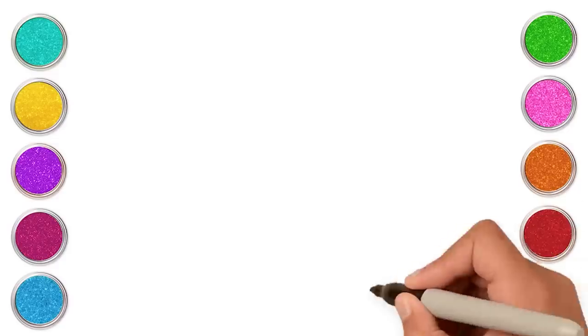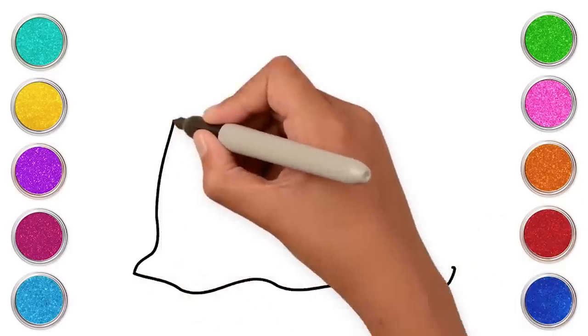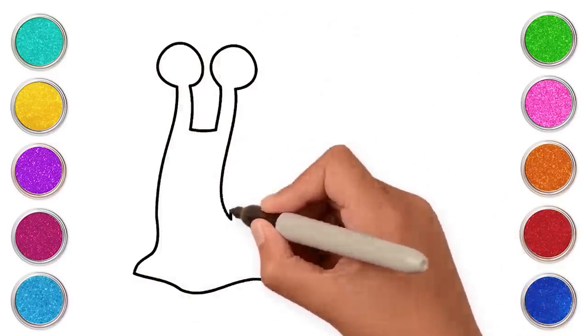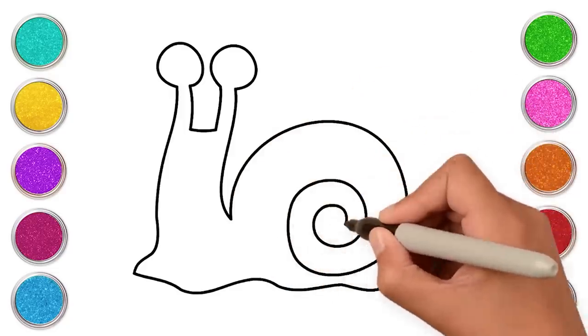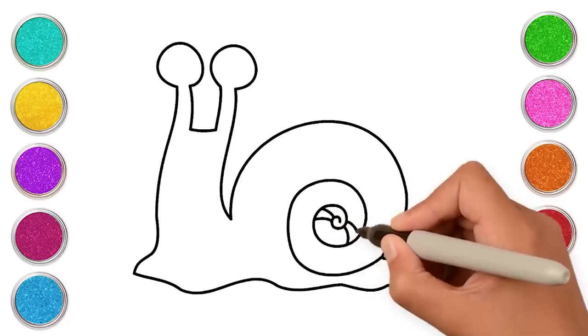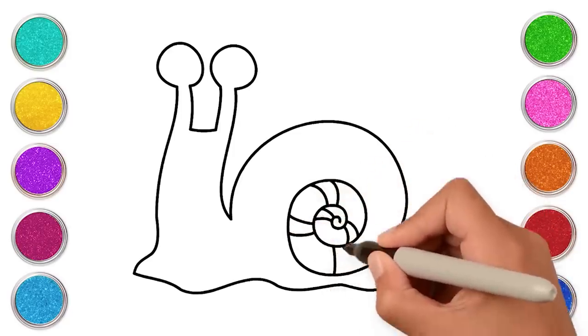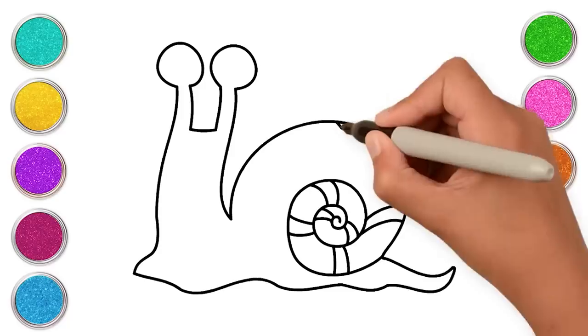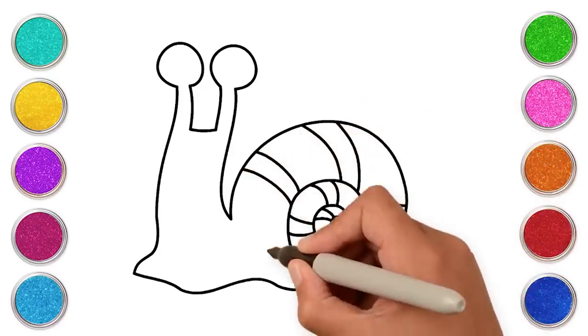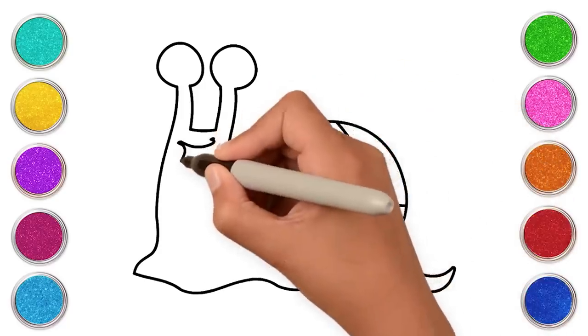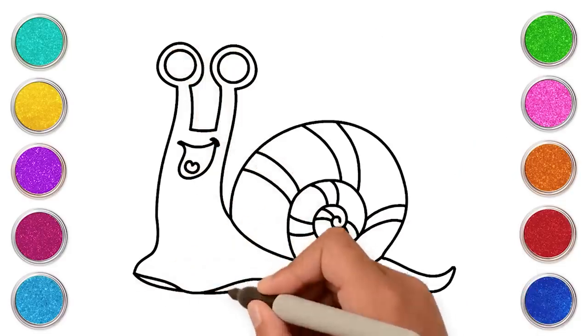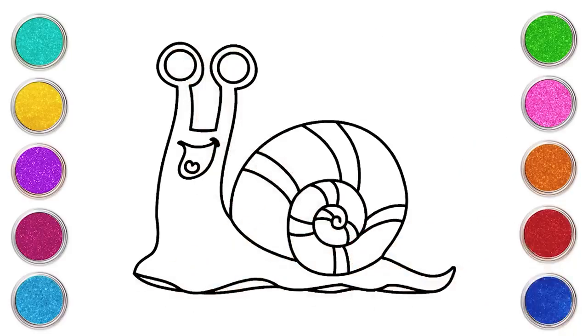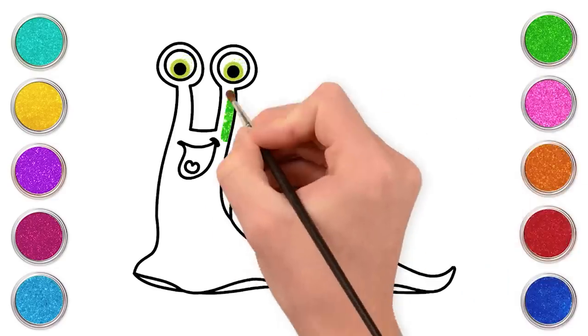Hi kids! Let's make a snail today! We will start by making the body of the snail with a hard round shell. The mouth. And, of course, the eyes. Wasn't that easy? Now it's time to fill in colors in our snail. Let's use green for the body.